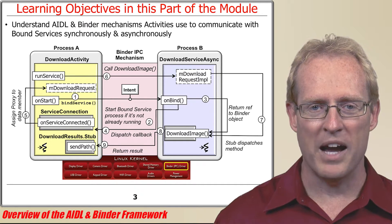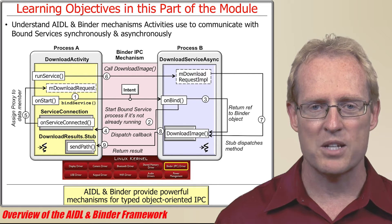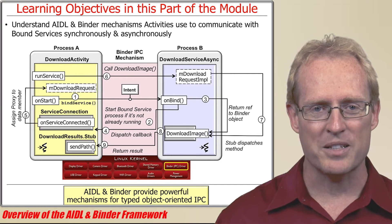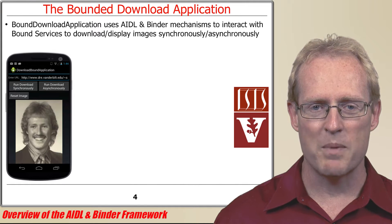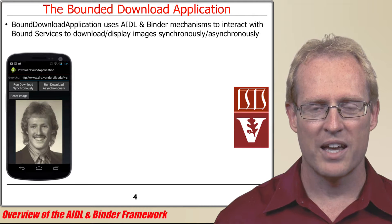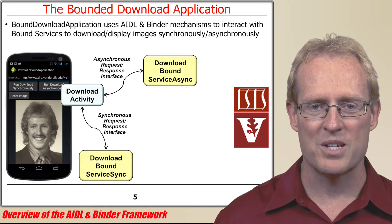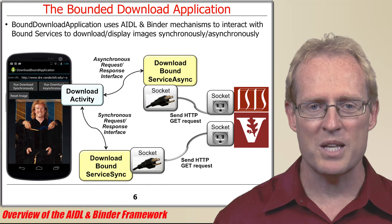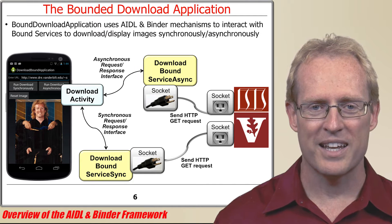The AIDL and binder provide powerful mechanisms for object-oriented inter-process communication that largely mimic typed method invocations on Java objects. Throughout this video, we'll motivate these mechanisms in the context of a bound download application that uses the AIDL and binder to interact with a pair of bound services to download images synchronously and asynchronously from a remote web server and display them in the user interface thread.